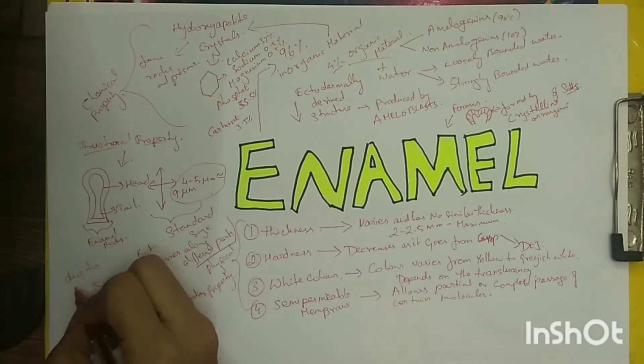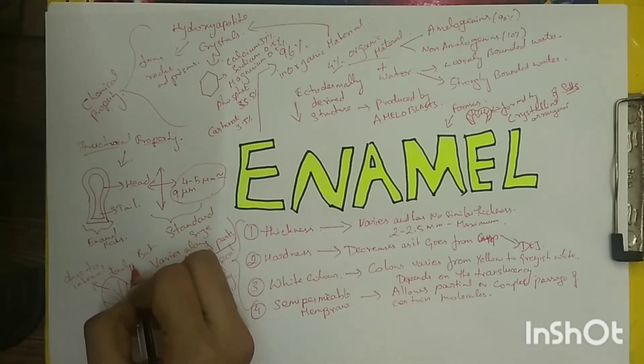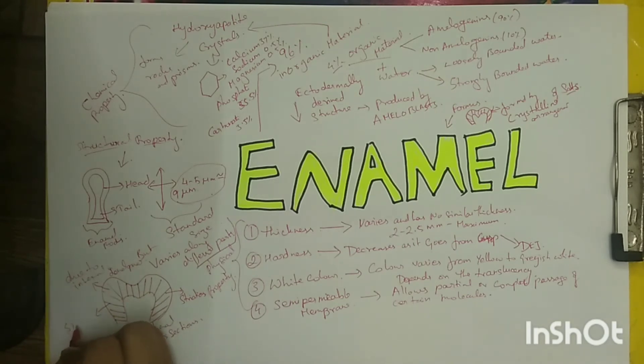Each striation is thought to represent a rest phase during the formation of enamel. These striations are more pronounced in sections that have been etched with dilute acid.